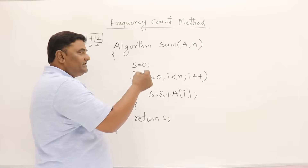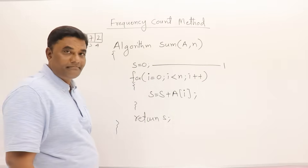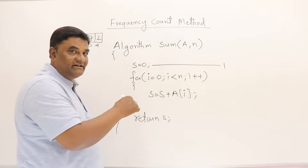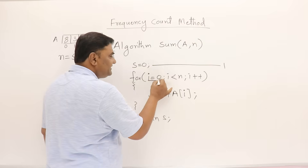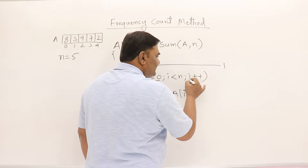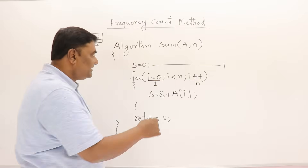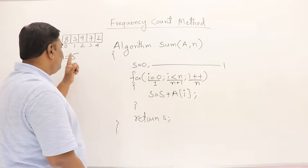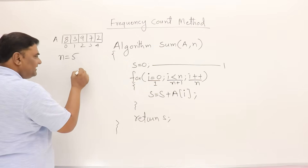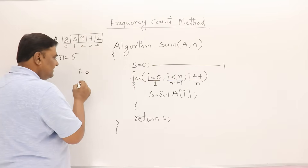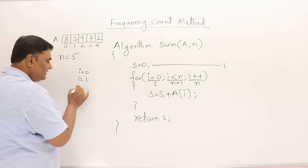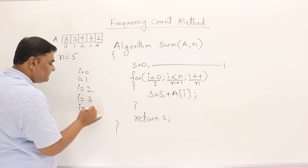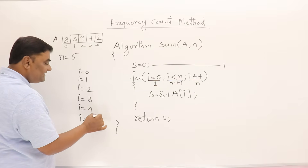This is a simple statement so it takes one unit of time. This is C language code. The initialization will execute one time. The loop condition will be checked for n plus one times. When n is 5, i starts at 0: 0 < n, 1 < n, 2 < n, 3 < n, 4 < n — and 5 is not less than n, so it stops.